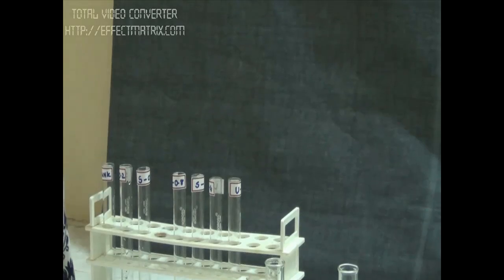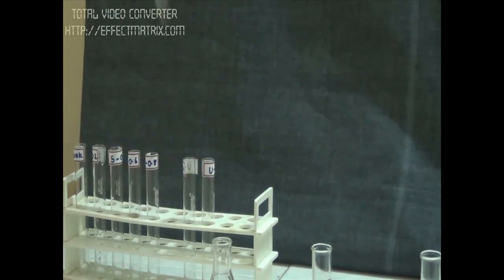In the fourth tube, we will add 0.6 ml of standard protein. In the fifth tube, we will add 0.8 ml of standard protein. In the sixth tube, we will add 1 ml of standard protein solution. For unknown protein,